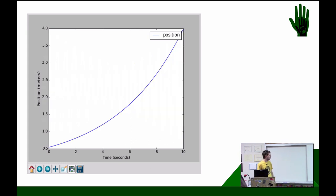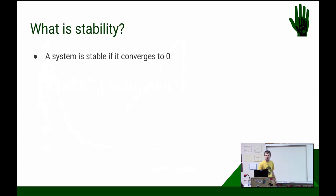Is this stable? Yeah. It's blowing up. This one's not stable. Is that one stable? Yes. Yes. OK. So what is stability? A system is stable if it converges to zero.